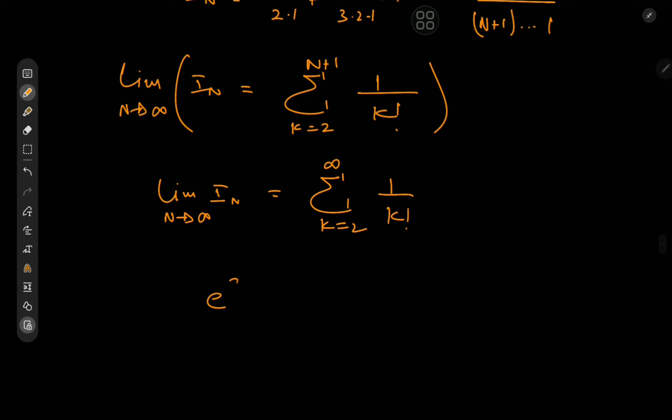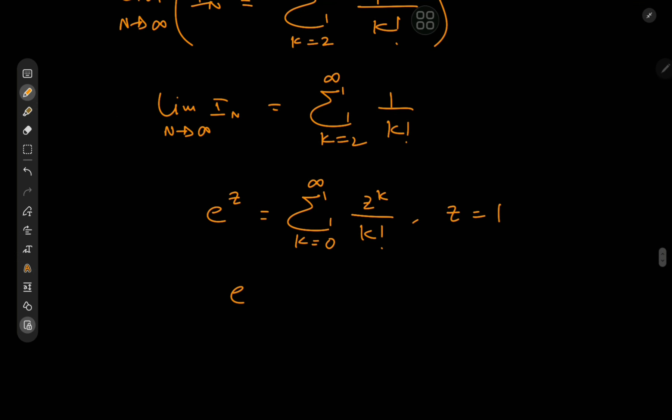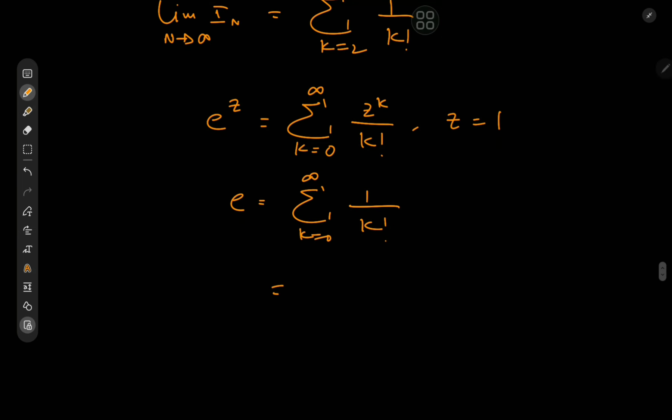Recall that for the exponential function e^z we expand it as the sum over the non-negative integers k, so we have the sum from k equals 0 to infinity of z^k divided by k!. So for z equal to 1 we have e equal to the sum over k of 1/k!, but we need the sum to start at k equal to 2 not k equal to 0, so we'll just peel away the terms 1 and 2.